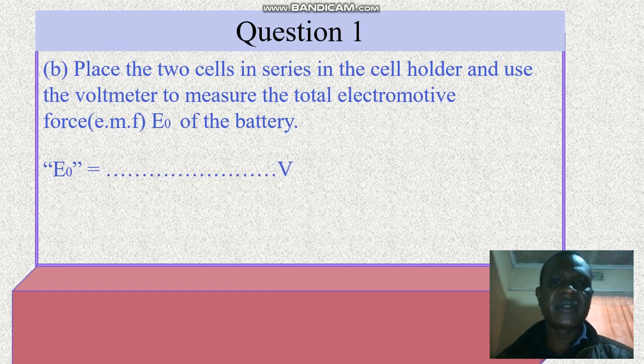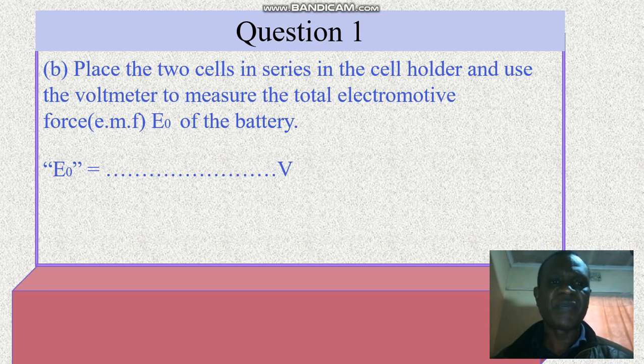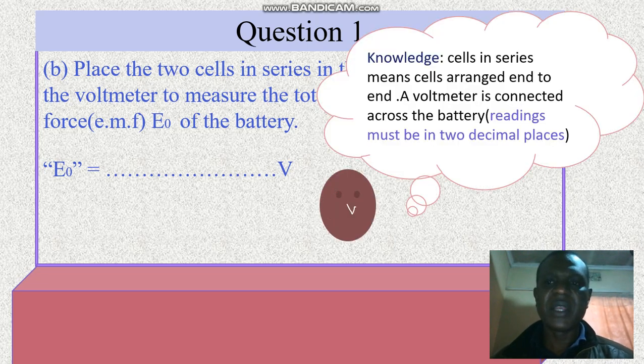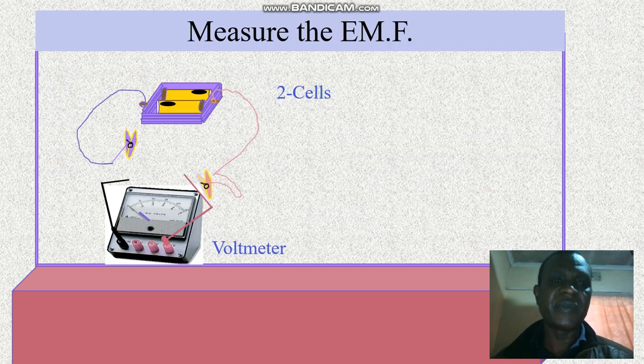Place the two cells in series in a cell holder and use the voltmeter to measure the total electromotive force, the EMF, which is denoted by E naught in voltage. Cells in series means end to end. A voltmeter is connected across the battery and read, and make sure that the reading must be in two decimal places.